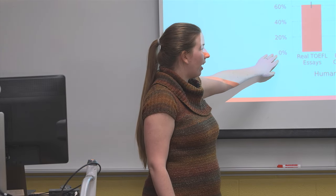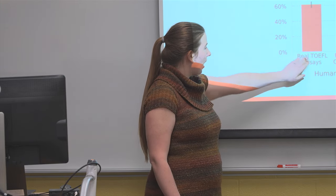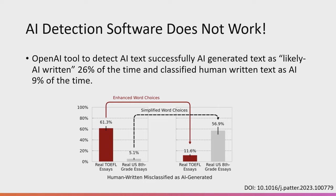A study tested nine different AI detection tools using real TOEFL essays — essays written by non-native English speakers. The tools on average said 61% of these really written essays were AI-generated. When the same tools were given real US 8th grade essays, only 5% were flagged as AI-generated. This shows a significant bias against non-native English speakers, making these AI detection tools unreliable.